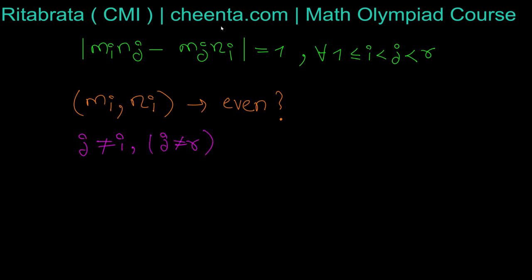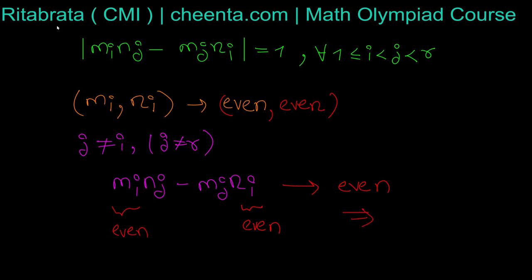If mᵢ is even and nᵢ is also even, then this quantity mᵢnⱼ is even, and this quantity mⱼnᵢ is also even. That would give the total quantity as even, which is a contradiction. So the (even, even) pair can never occur.